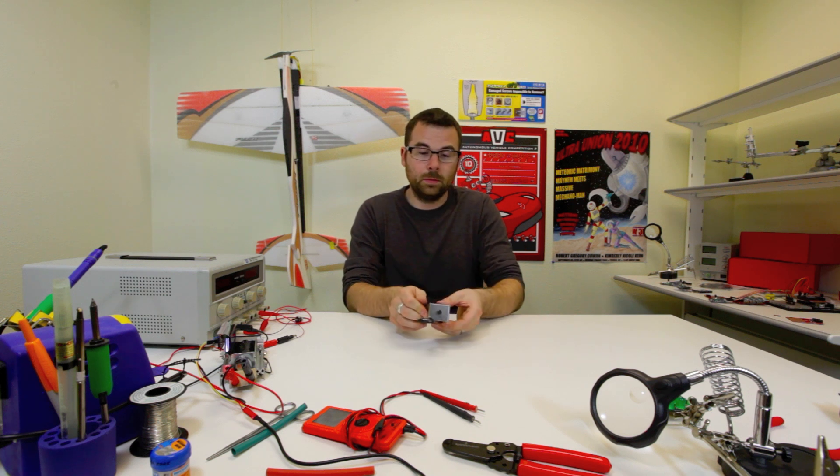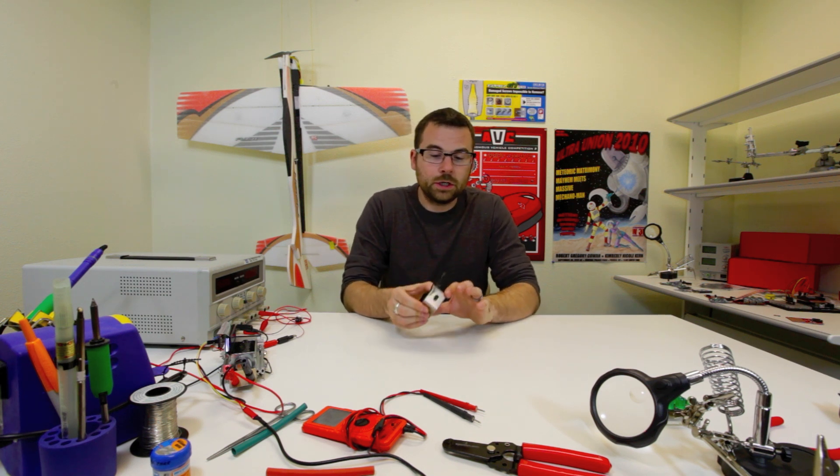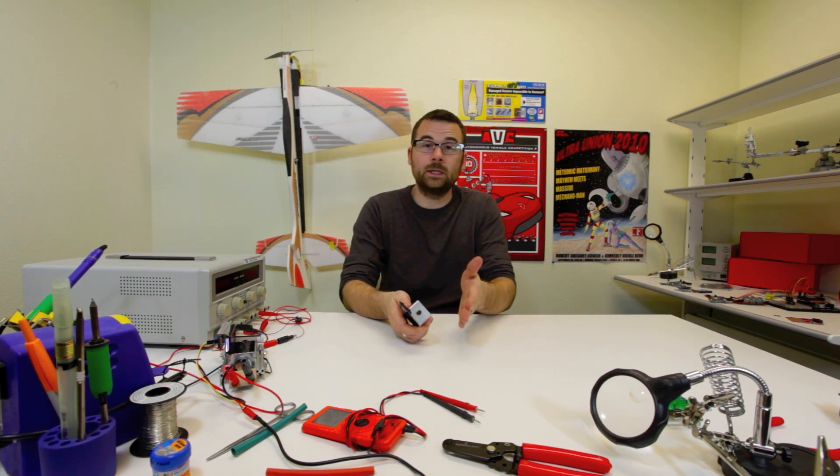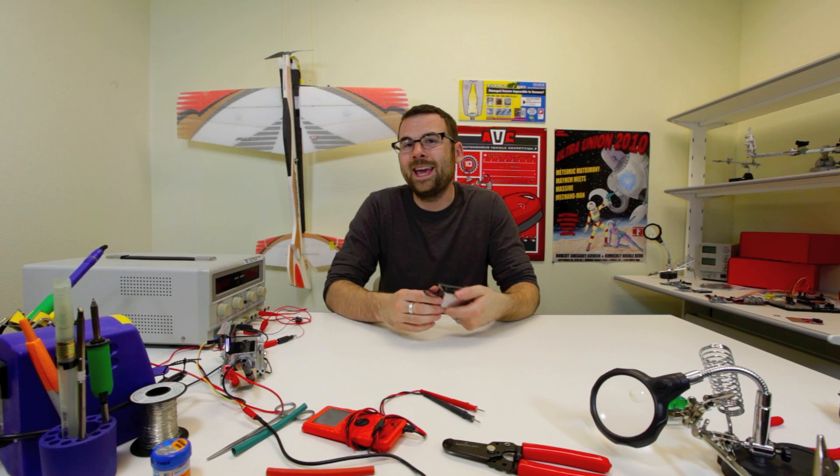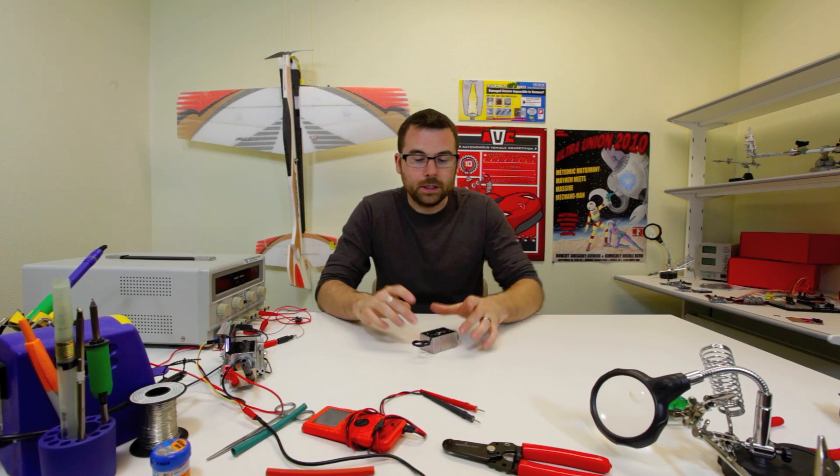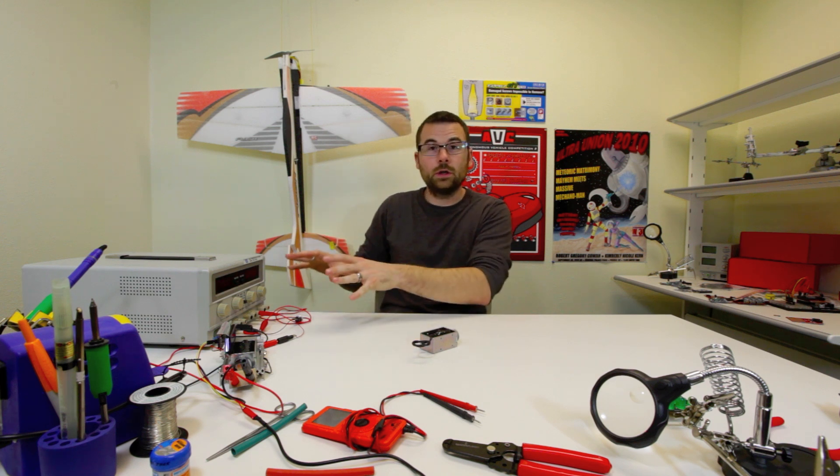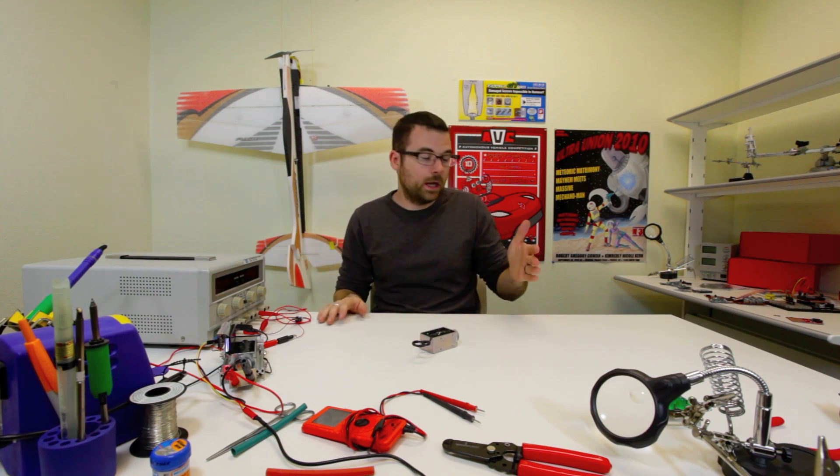This is traditionally used in something like a pinball machine, but you can also use these to activate levers or push things out of the way, all sorts of different mechanical applications. This particular solenoid operates at 36 volts, although as we're going to show from a demo, you can easily operate anywhere from 5 to 36 volts.